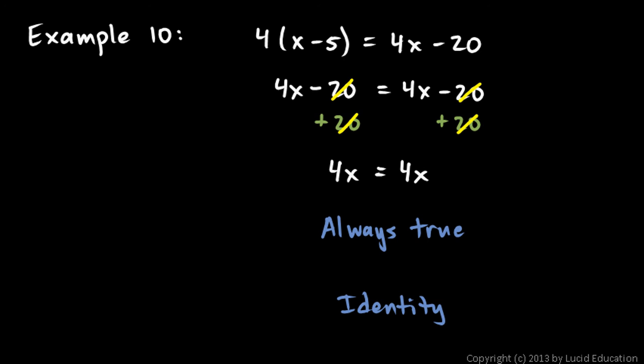So this equation up here, the original equation is an example of an identity. This is always equal to that for any value of the variable. If you want to write an answer to the problem, one thing you can write, you can write any real number. Any real number would be a valid solution to this equation. You could put in any number for x right there and there, and this would equal that.